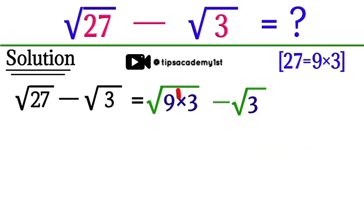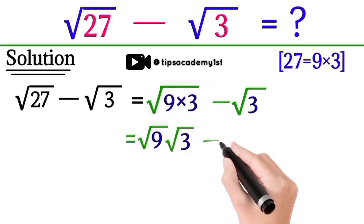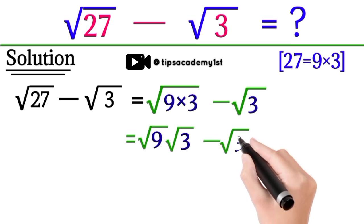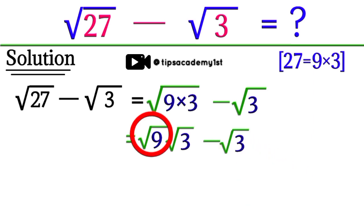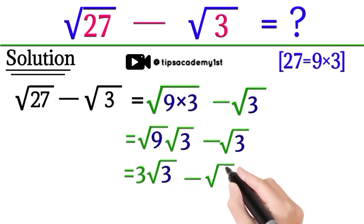Now we will separate the square root of 9 and square root of 3. Here, square root of 9 is equal to 3, and square root of 3 minus square root of 3 will remain the same in both terms.